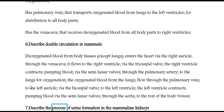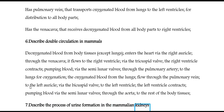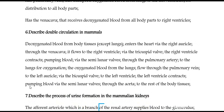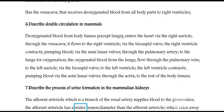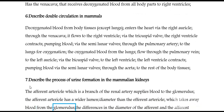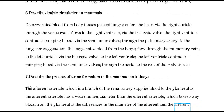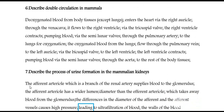Describe the process of urine formation in the mammalian kidneys. The afferent arteriole, which is a branch of the renal artery, supplies blood to the glomerulus. The afferent arteriole has a wider lumen than the efferent arteriole, which takes blood away from the glomerulus. This difference in diameter causes high pressure, leading to ultrafiltration of blood.